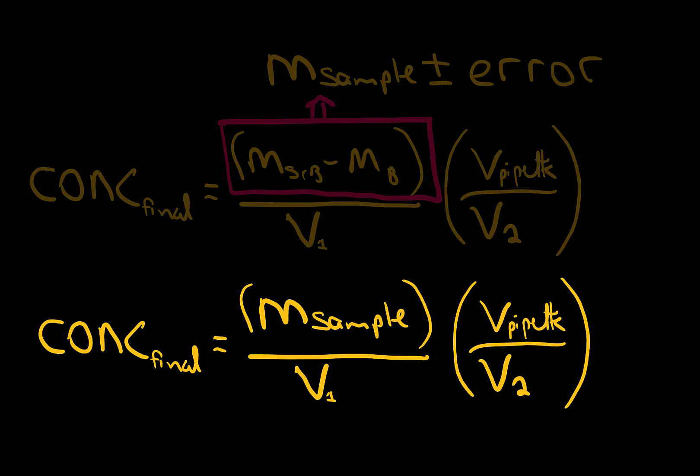Once we do that, I guess we've come up with a slightly simpler equation where the mass of our sample has an error associated with it. So let's deal with that one step first.